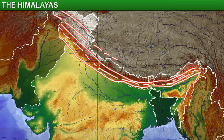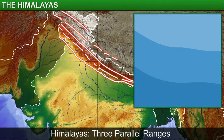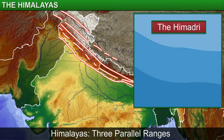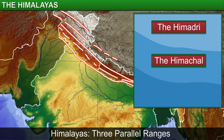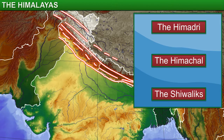The Himalayas are formed from three parallel ranges of mountains: the Himadri, the Himachal, and the Shivaliks. Several valleys lie between these mountain ranges.